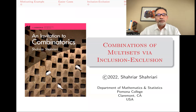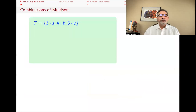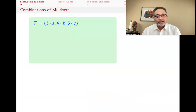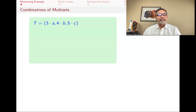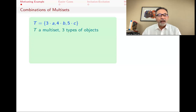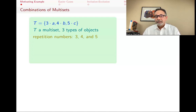Let's get started with a motivating example. Here's a multiset. A multiset is a set except its elements might be repeated. So this set T has three copies of A, four copies of B, and five copies of C. It has three types of elements, but these numbers have repetition numbers or multiplicity: three, four, and five.